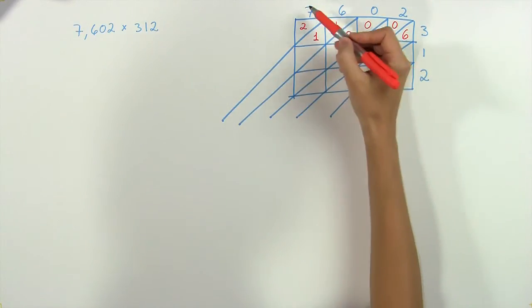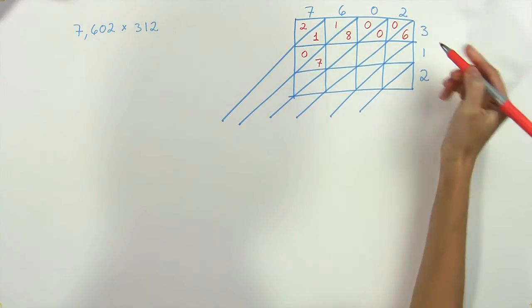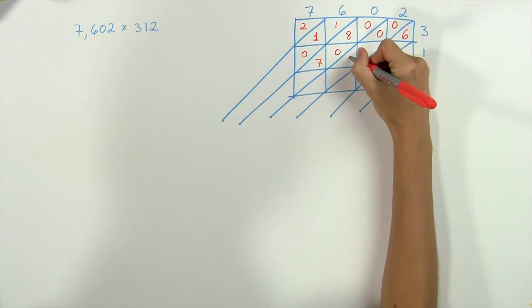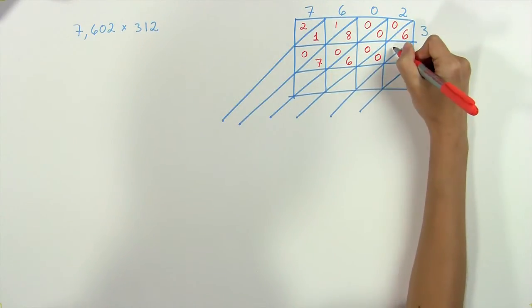Continuing on to the next row, we have seven times one, which is seven. Then six times one, which is six. Zero times one, which is zero. Two times one, which is two.